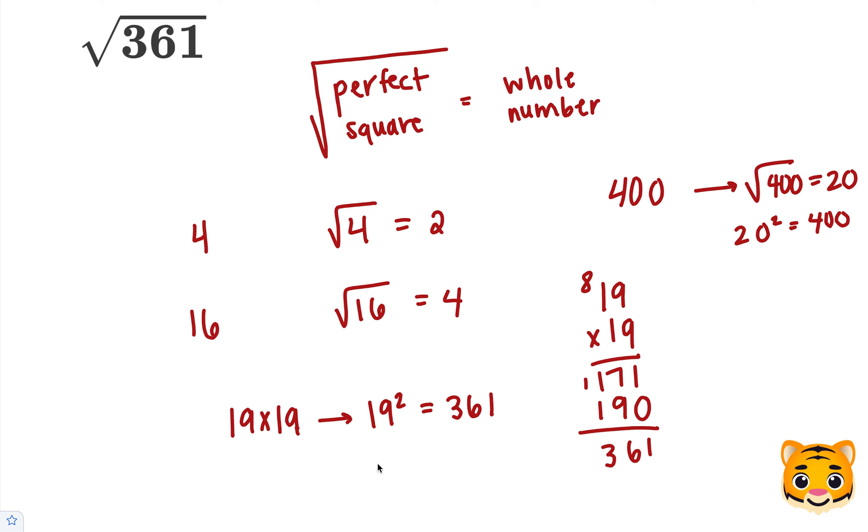Therefore, we can say the square root of 361 is equal to 19. Our solution is that the square root of 361 can be simplified to 19.